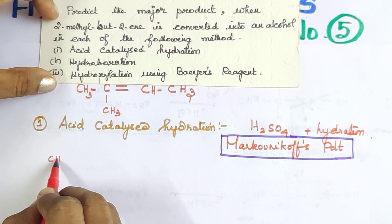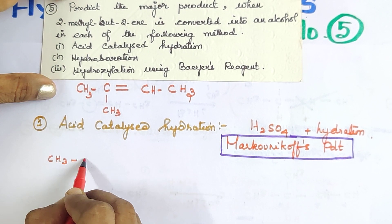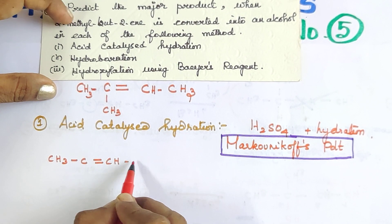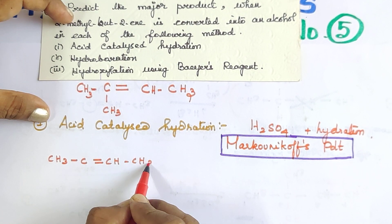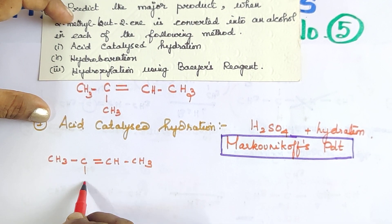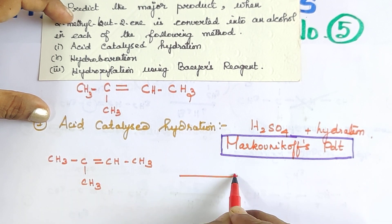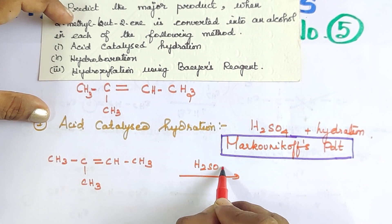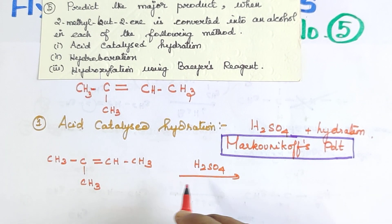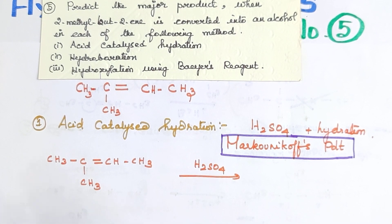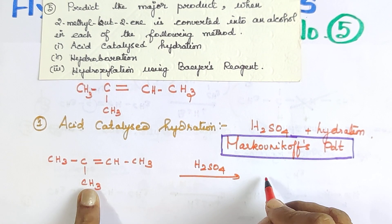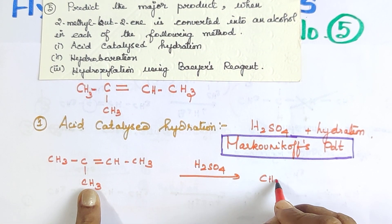We take 2-methyl-but-2-ene — CH₃-C=CH-CH₃ with a CH₃ branch — and treat it with H₂SO₄ and water. The OH group adds to the more substituted carbon according to Markovnikov's rule.